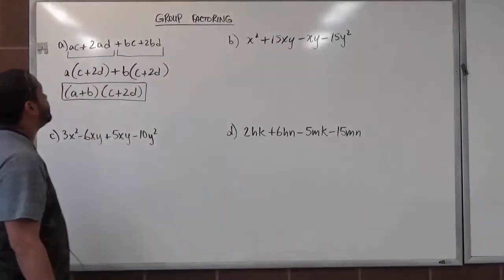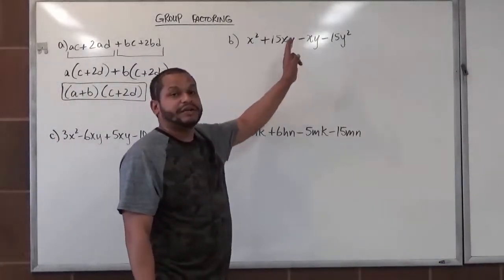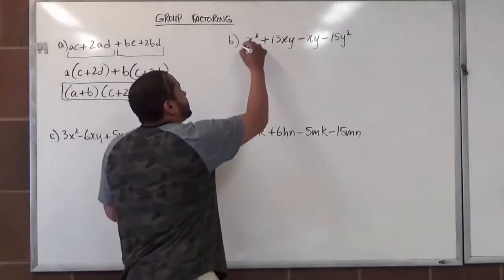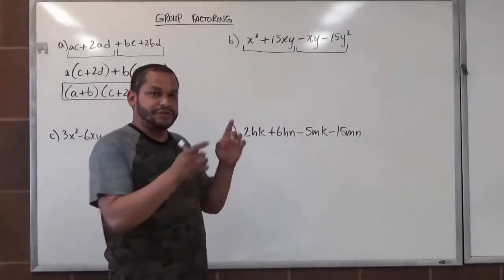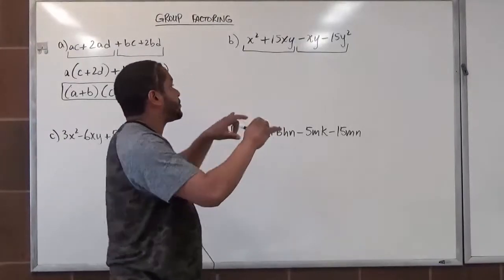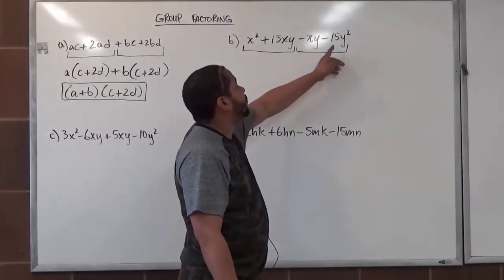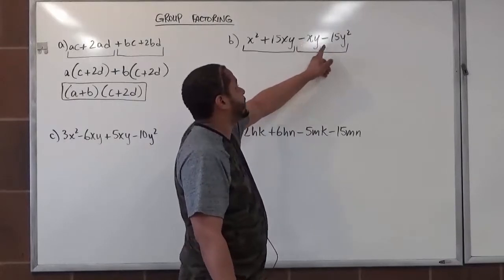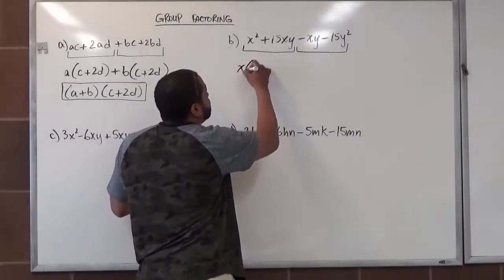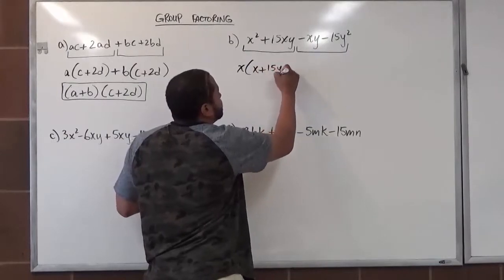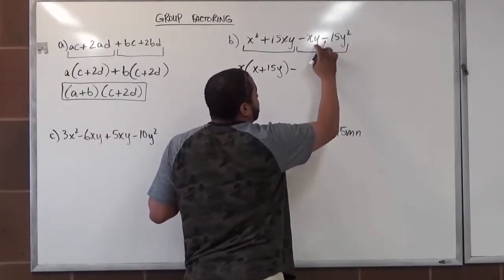Now let's take a look at this one, because it's a little bit different. Instead of having all positives, we have two negatives at the end, in which case we're going to be factoring out a negative term for the second group set. First we look to see if we have any common factors within the first two groups. If you don't have any common factors, you can rearrange your groups to find common factors for both sets. In this case, we have X in common for the first group, and a negative Y in common for the second group, since the second set has a negative term leading the third term. So let's begin with the first set — we have X in common and what's left over is X plus 15Y.